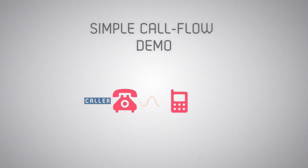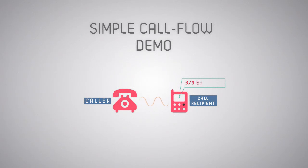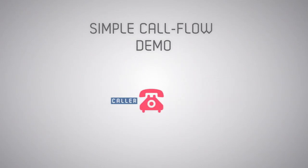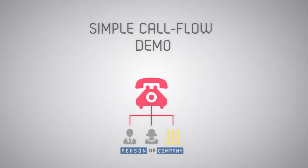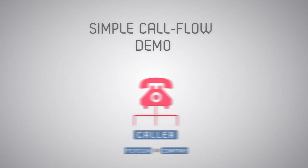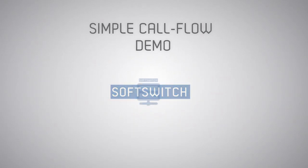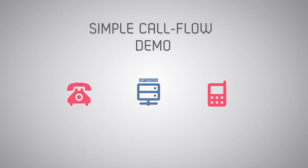All calls start with the caller and go to the call recipient. In this example we will be using the phone number 370-630-2222 to demonstrate the call flow. A caller is some type of device that initiates the call. The device's owner, or the person or company responsible for payment of the charges incurred by the call, is the caller.